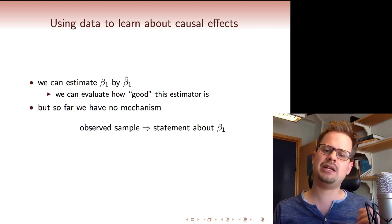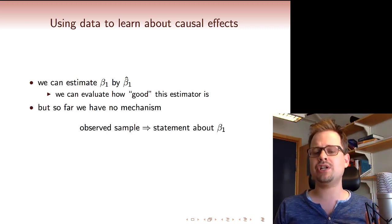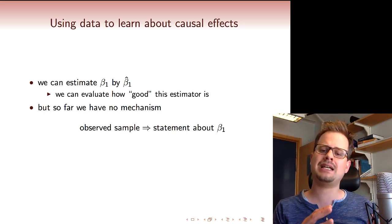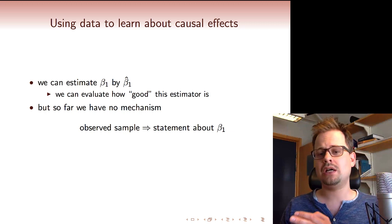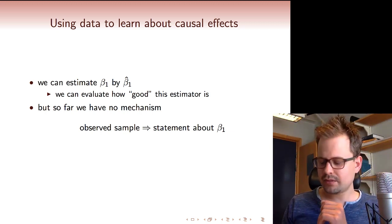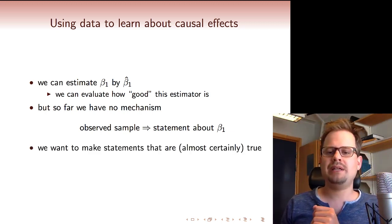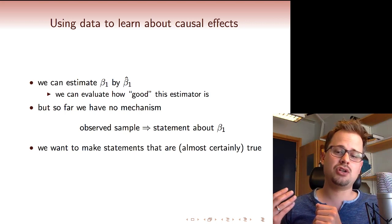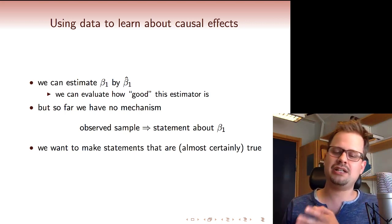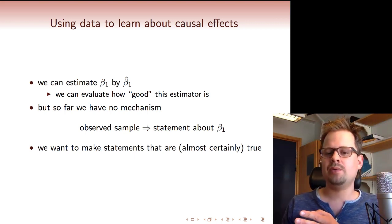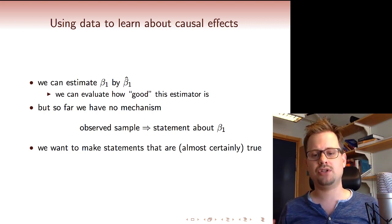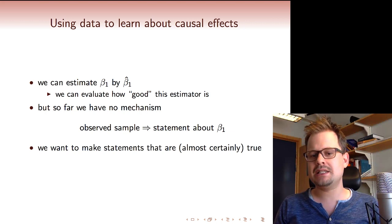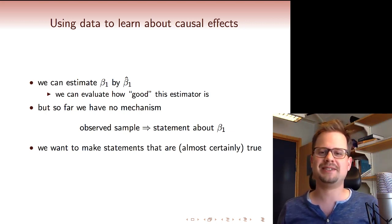So this is what we would like to have. We would like to have a mechanism where we look at the observed sample, and then we're not talking about estimates, but we're making a statement really about the population, about the true beta1. And we want the statement to be a true statement, or actually that will not quite work out. But we will have a mechanism that allows us to make statements that are almost always true. And so the mechanism by which we achieve this goal is called statistical testing.